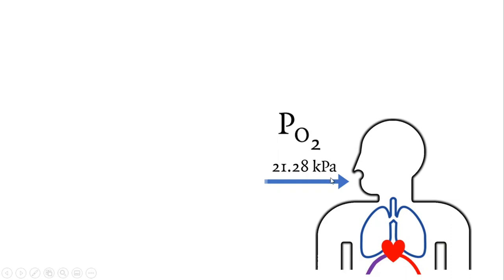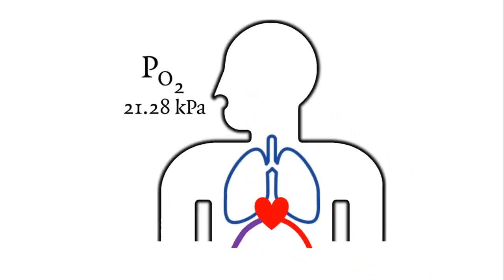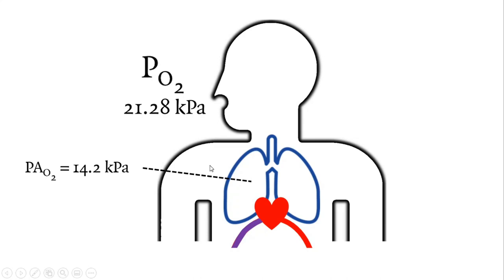From here, oxygen goes into our lungs where it gets mixed with CO2 coming from the blood, and water vapour. There are other molecules present. So the partial pressure of oxygen in the alveoli — capital A for alveoli — is lower than the partial pressure of oxygen in air. In air it is 21.3, but when it gets into the alveoli it becomes 14.2.